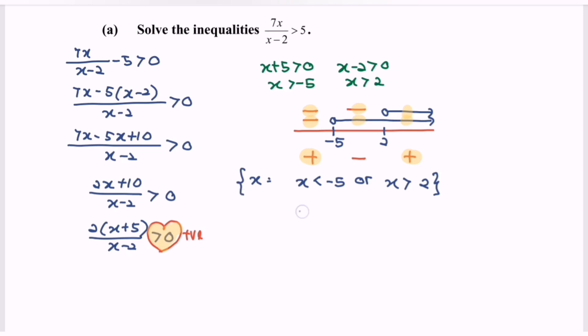In the interval form, negative infinity until negative 5, union 2 until infinity, where negative 5 and 2 are not included. So this is the set solution in interval notation.